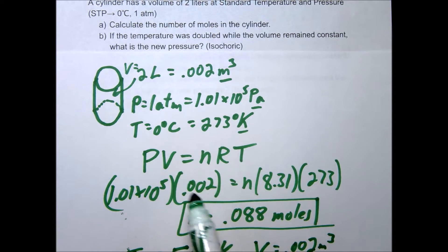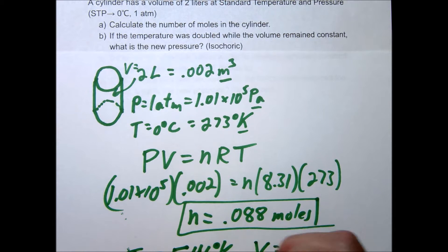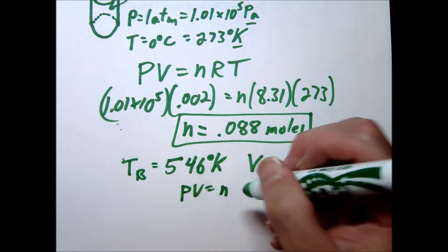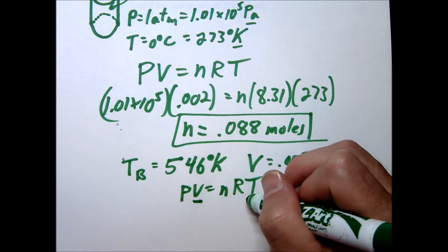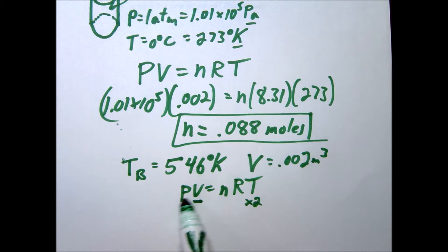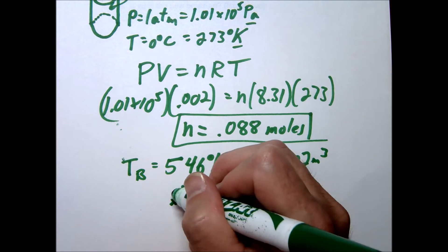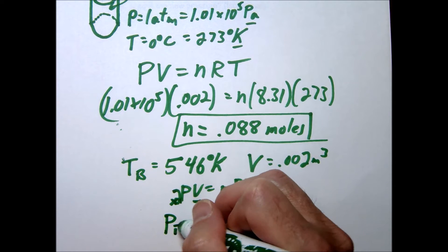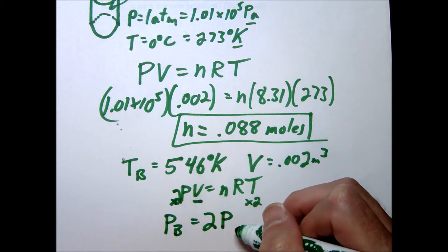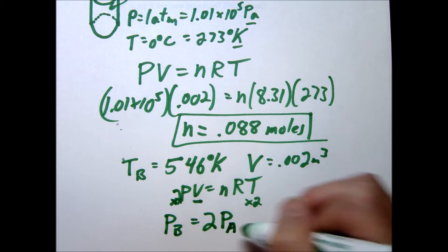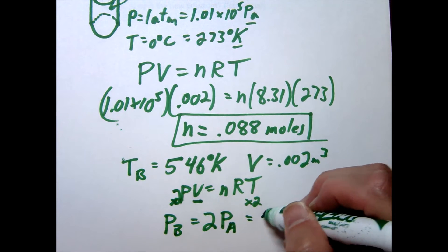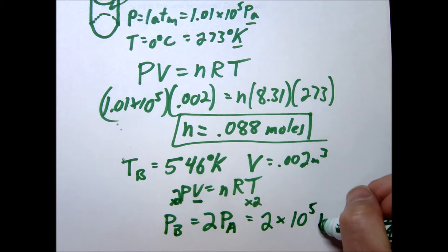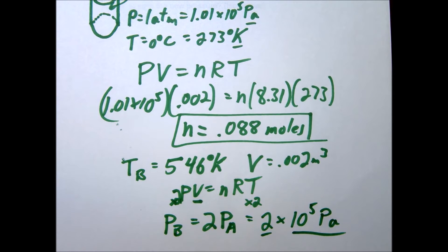You could plug values back into PV = nRT, but let's look at this conceptually. If volume is constant and we double the temperature, then the pressure must also double. So the pressure at point B should be twice the pressure at point A. Since A was 1.01 times 10 to the 5th, B is approximately 2 times 10 to the 5th pascals.